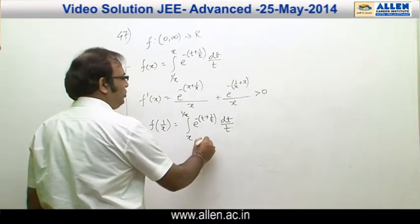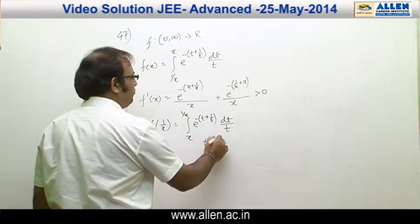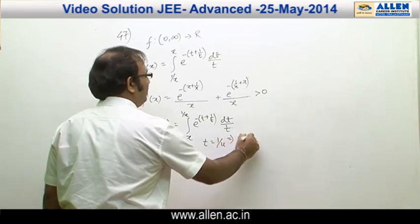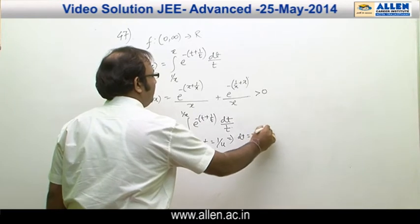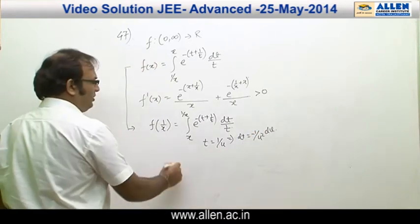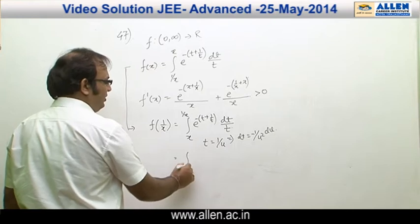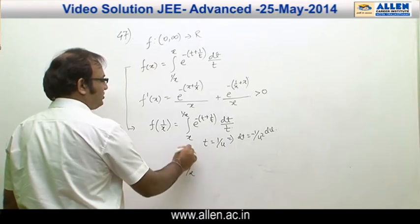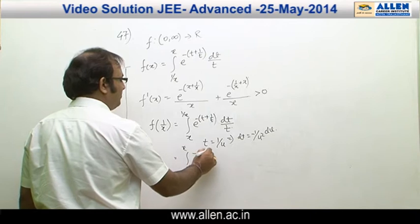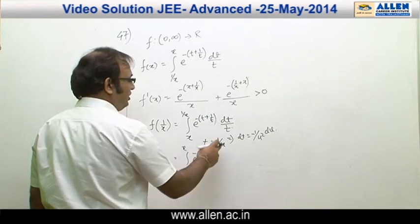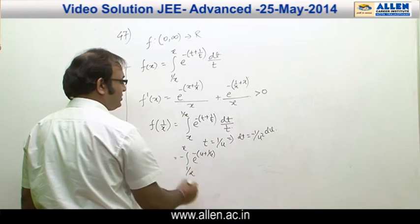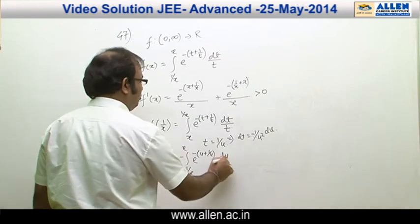Now if we substitute t = 1/u, this implies dt = −1/u² du, and the limits reverse to give ∫ from 1/x to x of e^(−u + 1/u) · (1/u) · (−1/u²) · (−du/u).